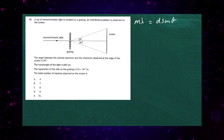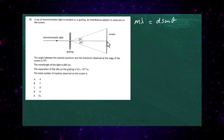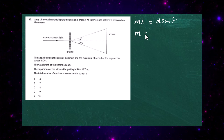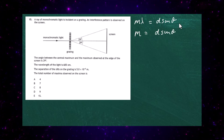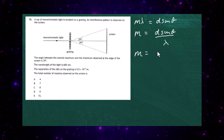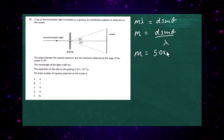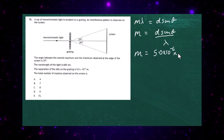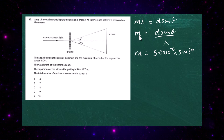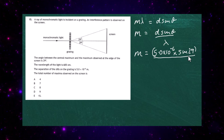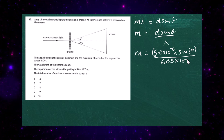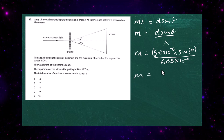We need to find the order m of the maximum at the edge of the screen. Rearranging, m = (d sinθ) / λ. Substituting values: m = (5.0 × 10⁻⁶ × sin29°) / (605 × 10⁻⁹), which gives m = 4. So the maximum at the edge of the screen is the 4th order maximum.